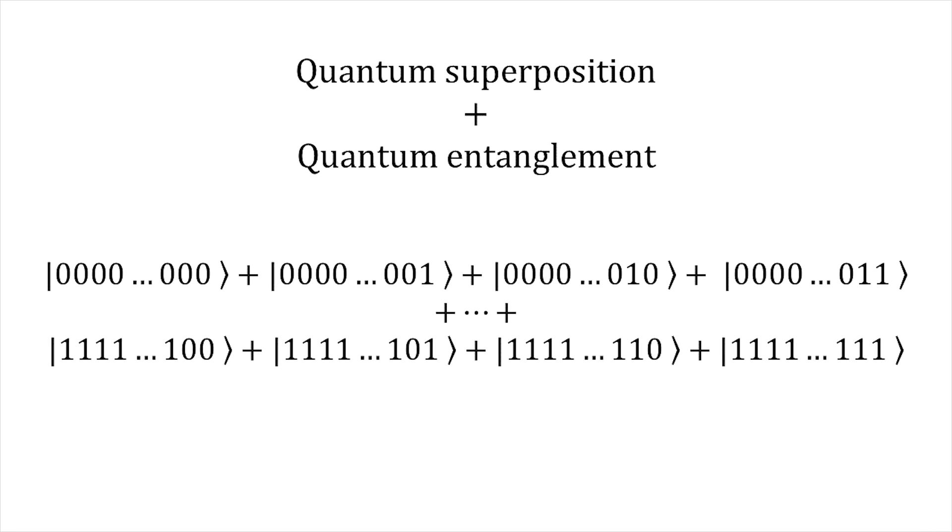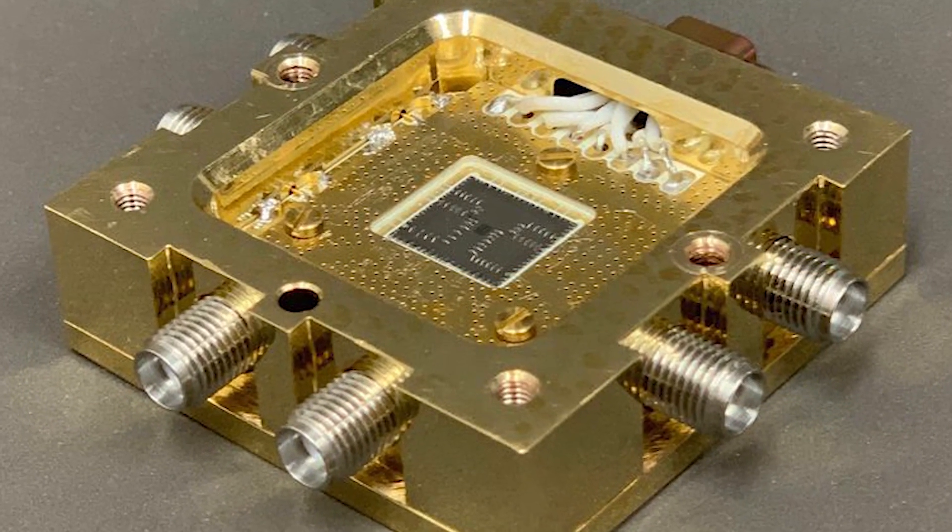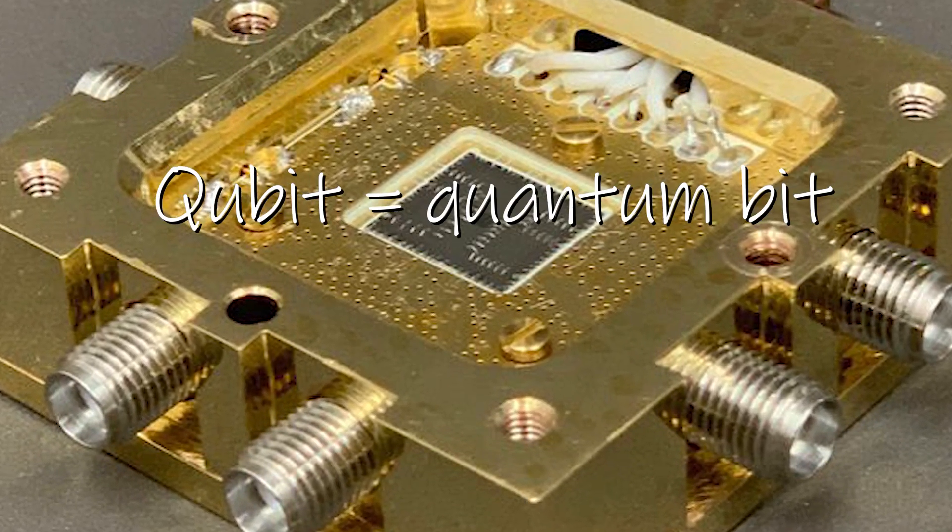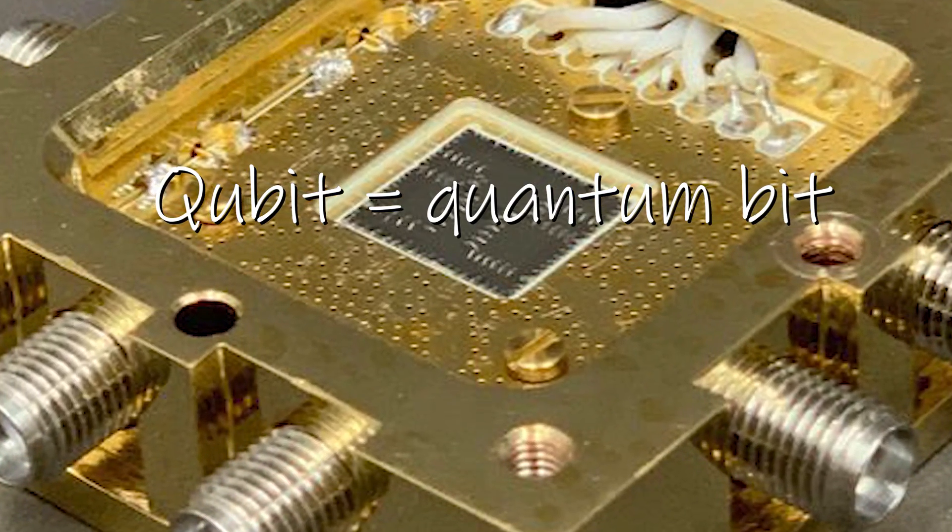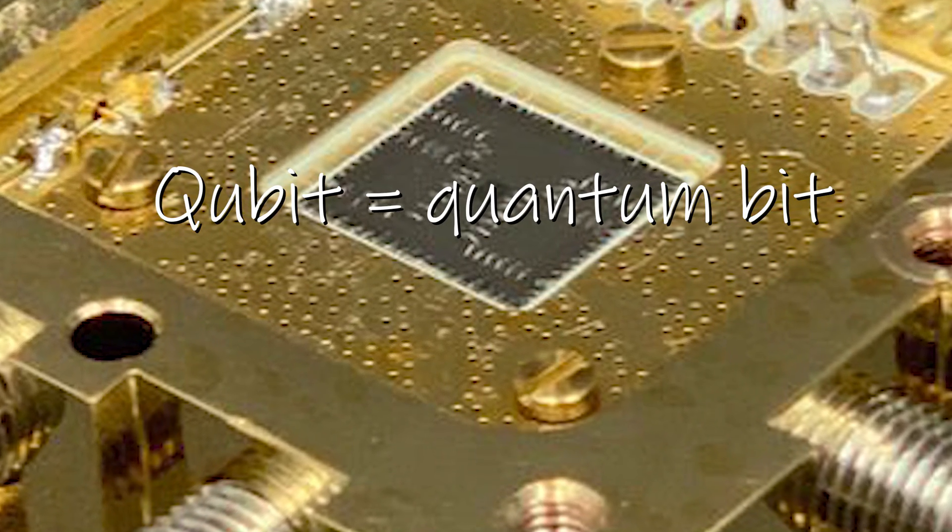You can use entanglement and superposition to create a gigantic superposition of states, and exploit this parallelization to go exponentially faster. These devices that can be in superposition of states and entangled, we call them qubit for quantum bit opposed to the classical bit of classical computer. These are really noisy and fragile devices.